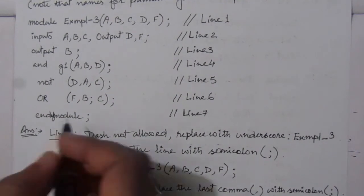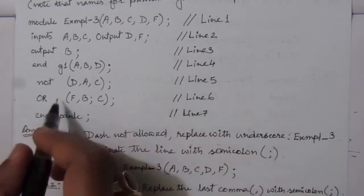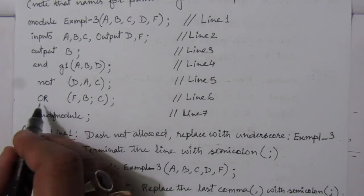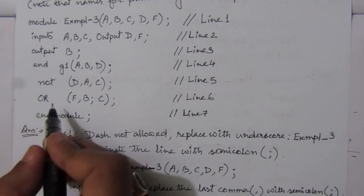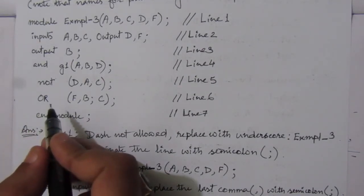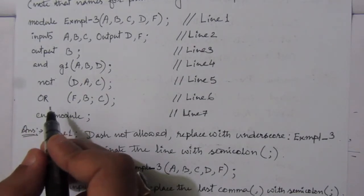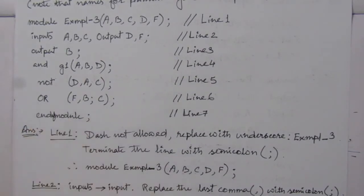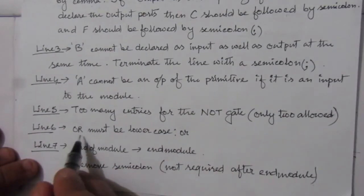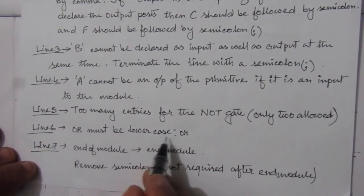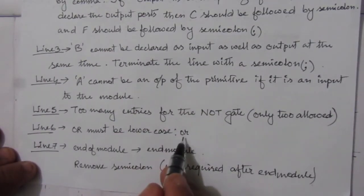In the sixth line, we can see that it is capital R, and capital R is not allowed. We have to write it in lowercase — that means small u, small r. So capital R must be replaced with lowercase.